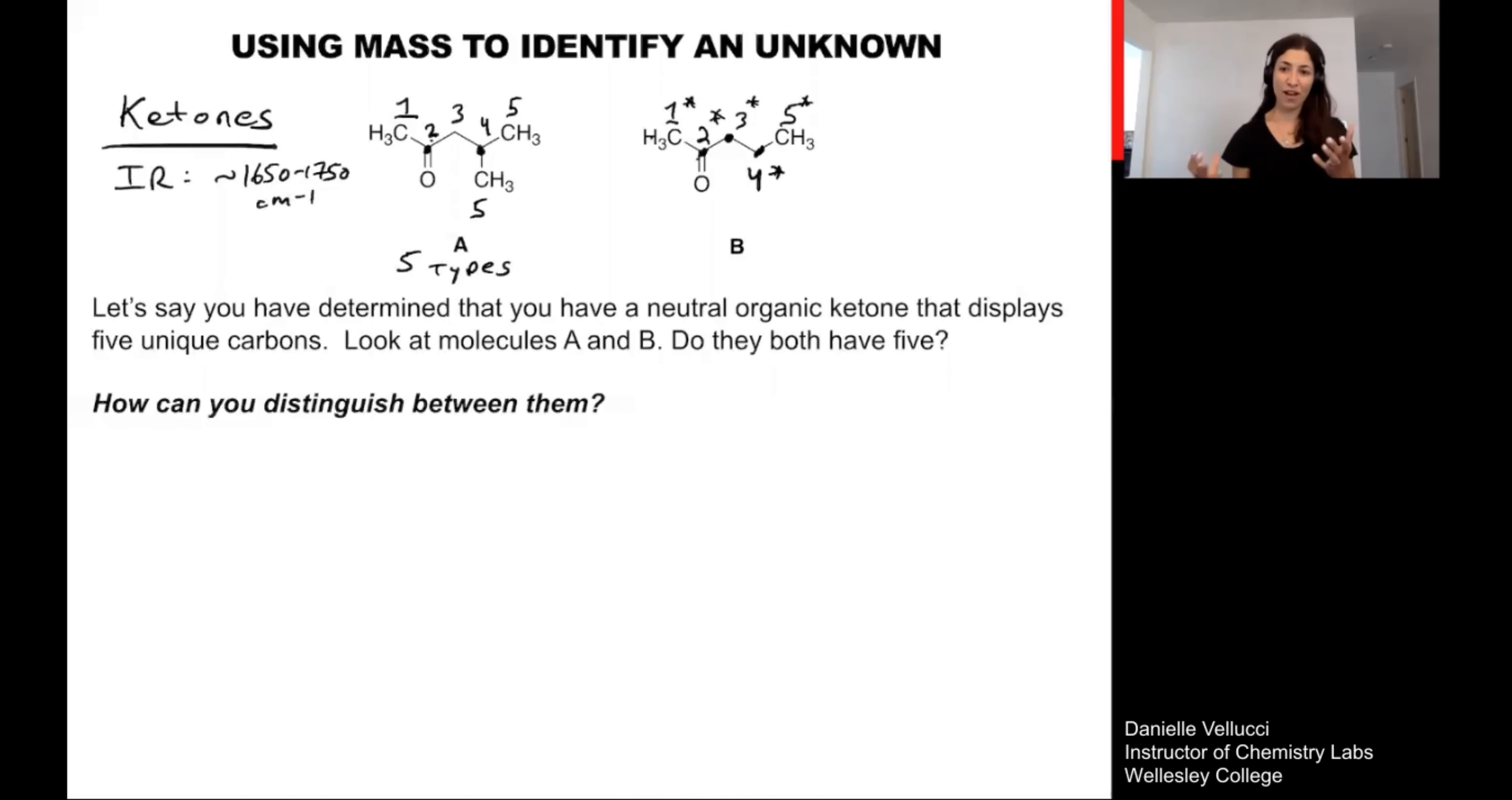So they both have five unique types of carbon. If I'm just looking at their mass spectrum and their C13 and their solubility data, it could be really hard to distinguish these two possibilities from my list. This is where mass is going to become important. If I look at molecule A, it has one, two, three, four, five, six total carbons. Whereas molecule B has only five total carbons. Their mass is different.